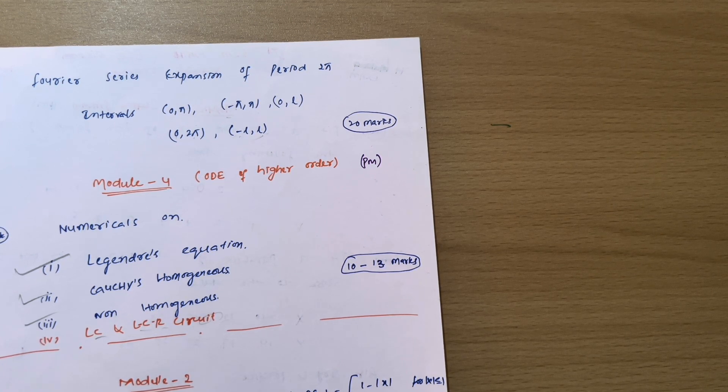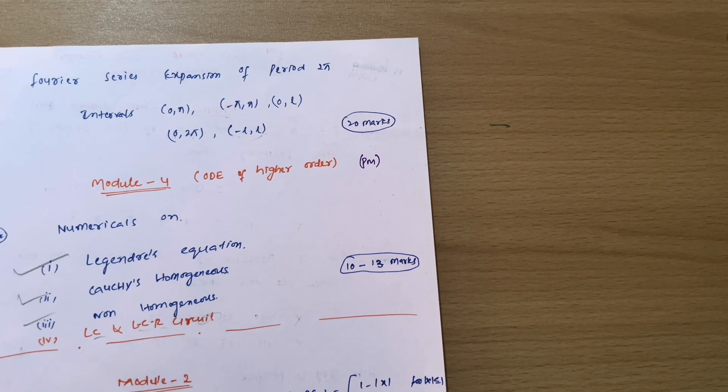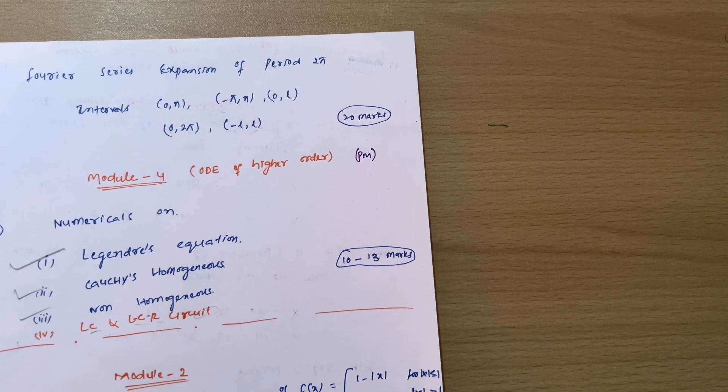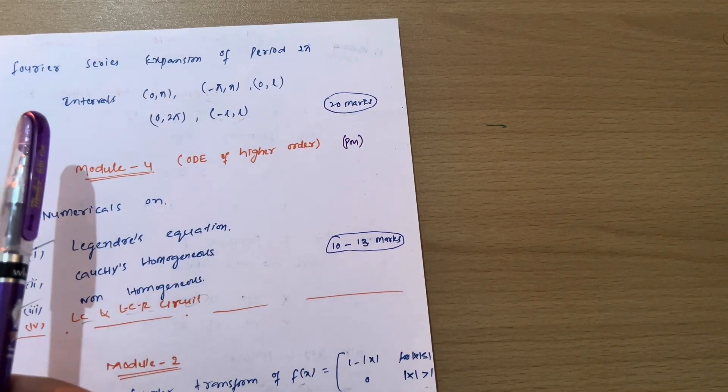Just because most of the students are facing difficulties in next modules, that is ordinary differential equation of higher order. And next we have Fourier transform. And next we have Z transform. So those modules are somehow typical to the students. That is why I am telling you it is compulsory for the students to get 40 marks from these two modules.